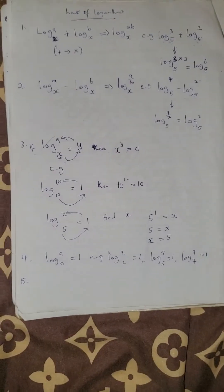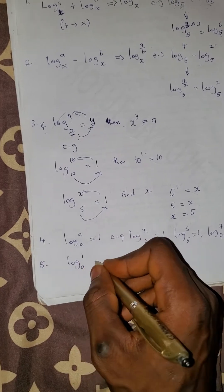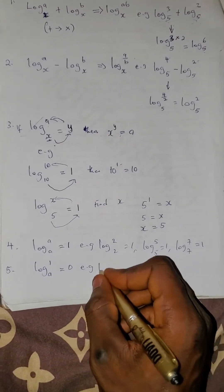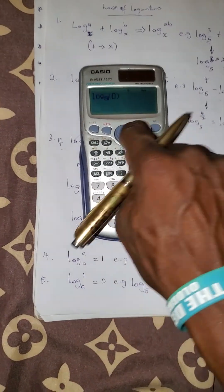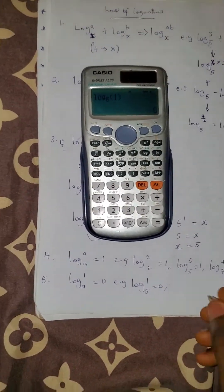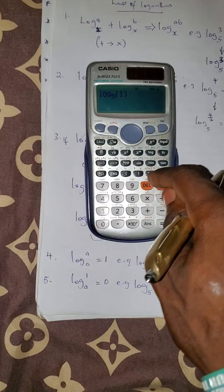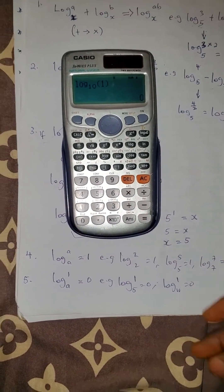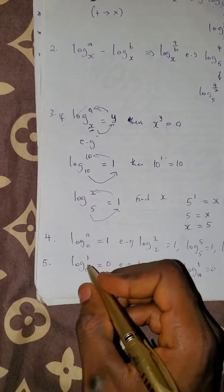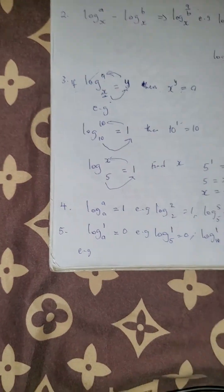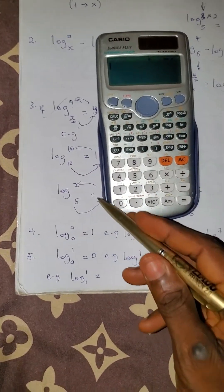Another law: log 1 base of any number equals 0. For example, log 1 base 5 is zero, and log 1 base 10 is also zero. Log of 1 to any base is zero. Now there's a special case: log 1 base 1.